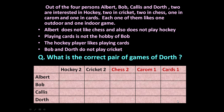Now let us put all the given conditions into this table. Albert doesn't like chess and doesn't play hockey. Playing cards is not the hobby of Bob. The hockey player likes playing cards — so one of the two hockey players also plays cards. Bob and Dorth do not play cricket. All these conditions are incorporated into the table.